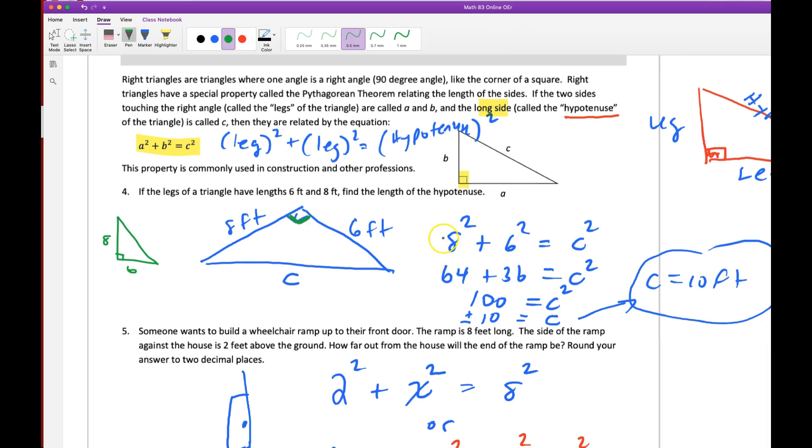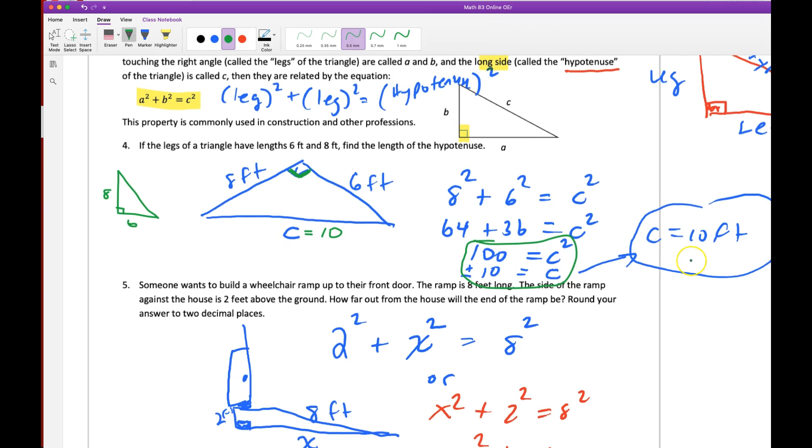Notice then, we just substitute those numbers into the equation. Leg squared, leg squared, hypotenuse squared. 64 plus 36 equals the missing side squared. Notice you end up with just a quadratic equation right here. Take the square root of both sides. What multiplied with itself equals 100? C equals plus or minus 10. But since we're talking about a distance, we know that answer is 10 feet.